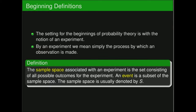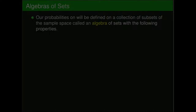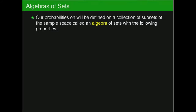An event inside the sample space is going to be a subset of the sample space — a set of outcomes that can happen. Typically we denote the sample space by the variable S. Our probabilities are going to be functions defined on a collection of subsets of the sample space, so a collection of events.